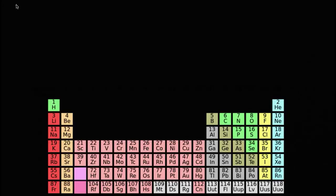Let's talk about a word you might have heard: ion. Let's talk about what it is, and then we'll talk about trends in the periodic table on how hard it is to make something an ion — in particular, how hard it is to make something a positive ion.